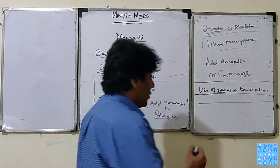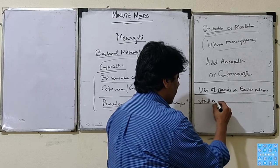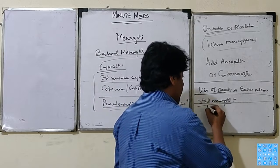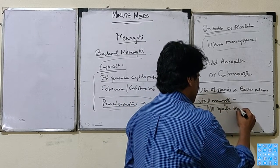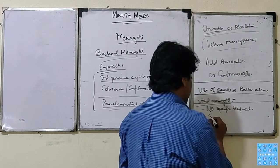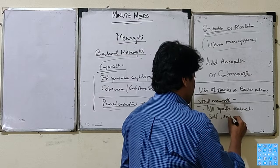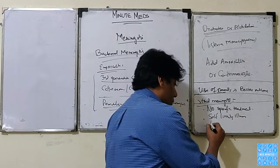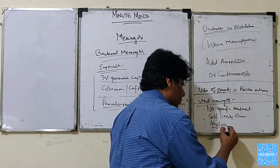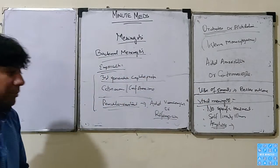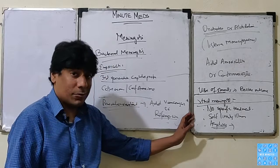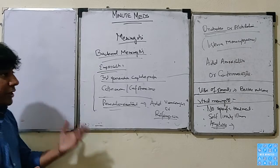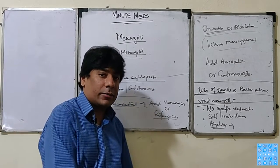For viral meningitis, there is no specific treatment because it is a self-limiting illness. Sometimes an antiviral can be used — usually acyclovir. But if the diagnosis is viral meningitis, there is no specific treatment; only symptomatic treatment is given. If the patient has fever, we give antipyretics and antiemetics.